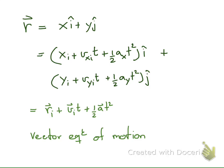So we can combine the quantities here. We can combine xi and yi to get ri, the initial position. We can combine vxi and vyi to get vi, the initial velocity. And we can combine ax and ay to get a, the acceleration. So we can write down the vector equation: R is equal to ri plus vi t plus half of a t squared.